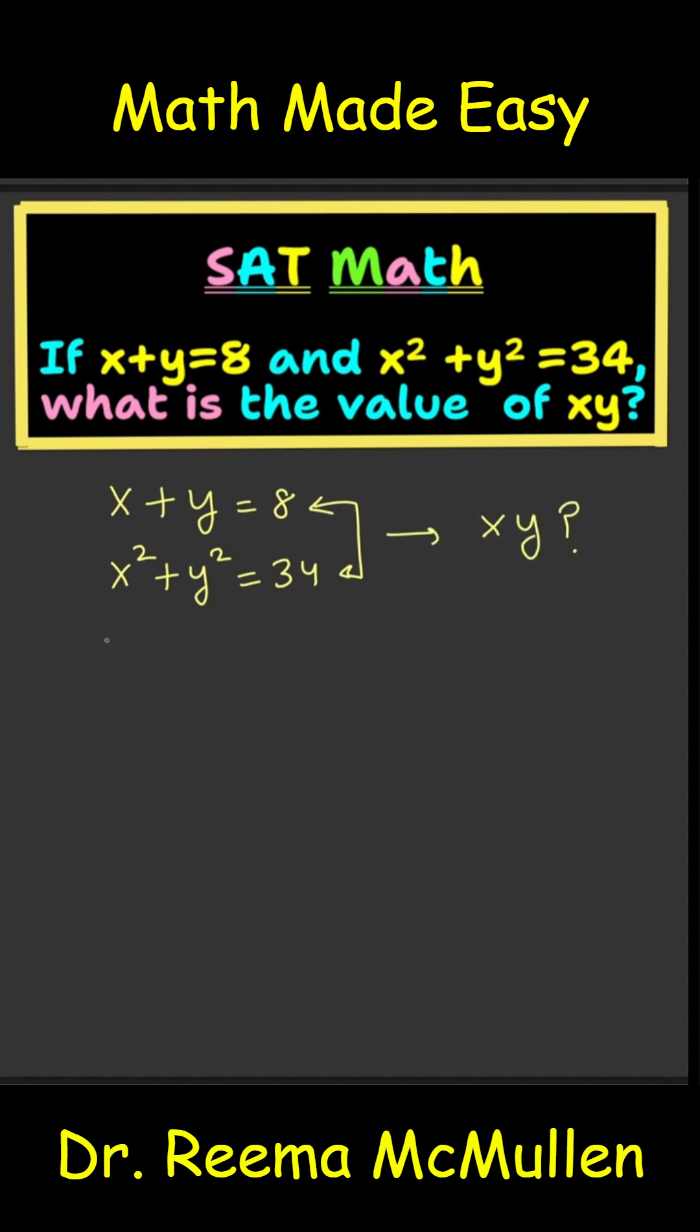So how do we relate these two equations to give us the value of x times y? Now, you might know this formula: x plus y, parentheses squared, equals x squared plus y squared plus 2 times xy. And if you do not know this formula already, I highly recommend that you memorize this formula because this is going to come handy at a lot of places.